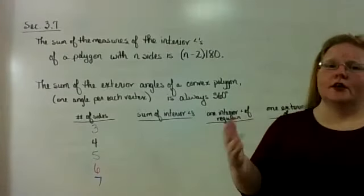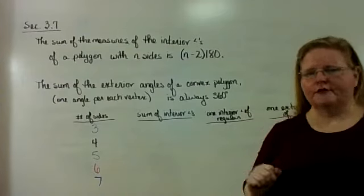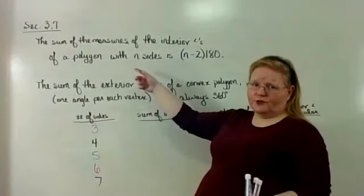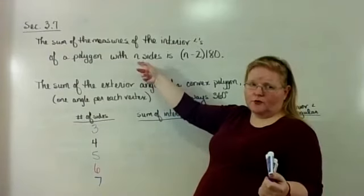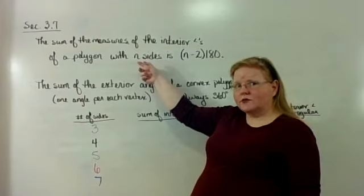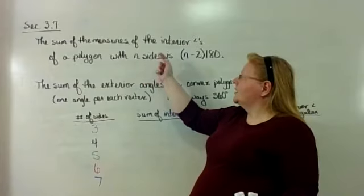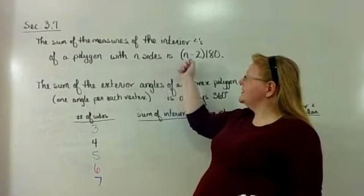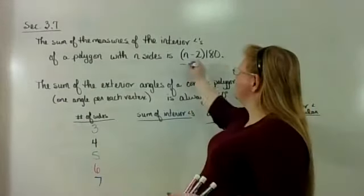Okay, so here are the two big takeaways from this section. The first one is the sum of the measures of the interior angles of a polygon, whether it's regular or not, has with n number of sides. I know you had the n-gon problem in the last section. So we've either already talked about what an n-gon is, which means you don't know how many sides it is. They're just telling you it has n number of sides. The sum of the measures of the interior angles of a polygon with n sides is this. This lovely formula right here is something you're going to want to memorize.